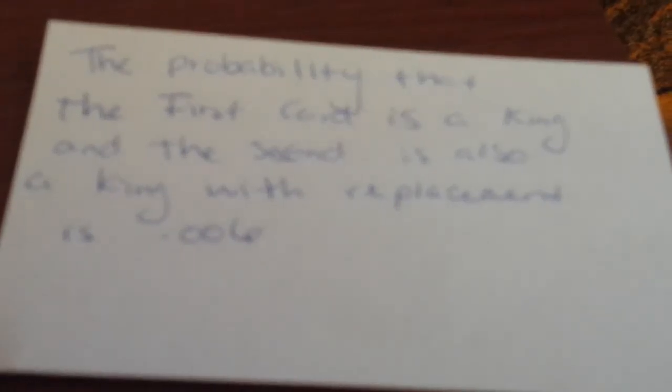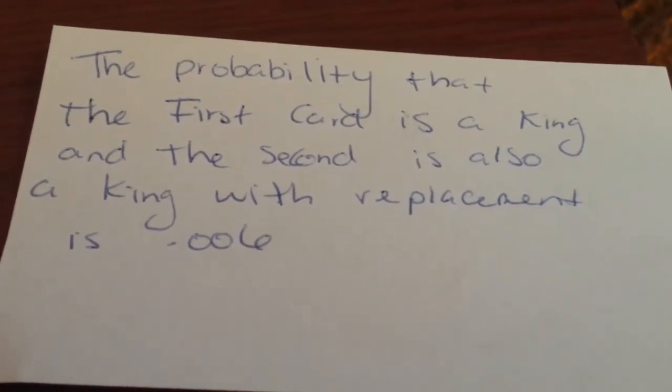The probability that the first card is a king and the second is also a king with replacement is 0.006.